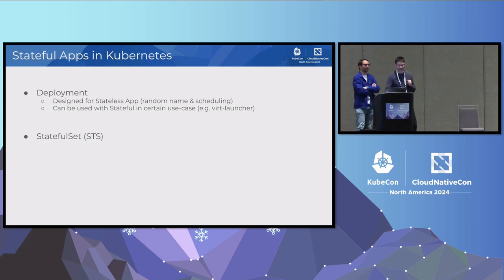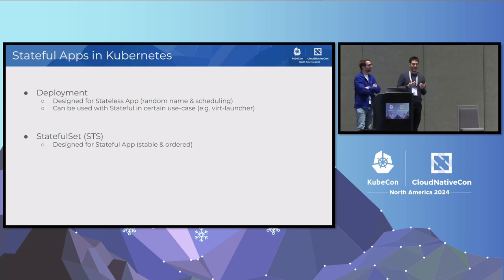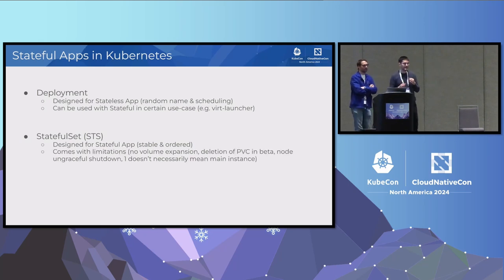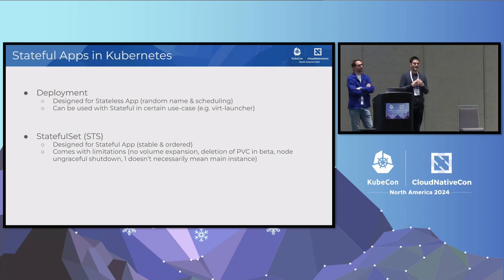The next thing Kubernetes provides is a StatefulSet, which can run multiple replicas of the same pod template where each replica gets its own storage — that's what we want — and each replica gets a stable name so you can find it easily on the network. However, StatefulSets are not perfect. For example, resizing: if you want to resize the volume in a StatefulSet, you must do it manually right now.